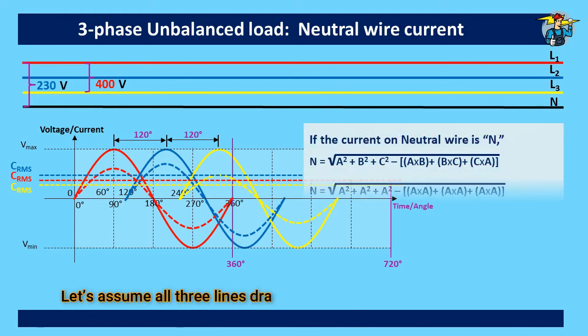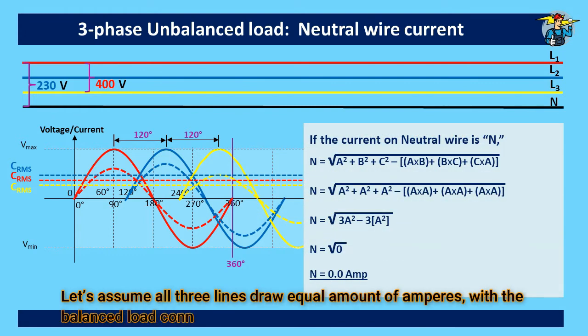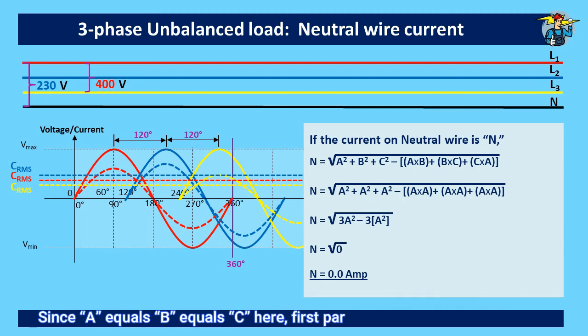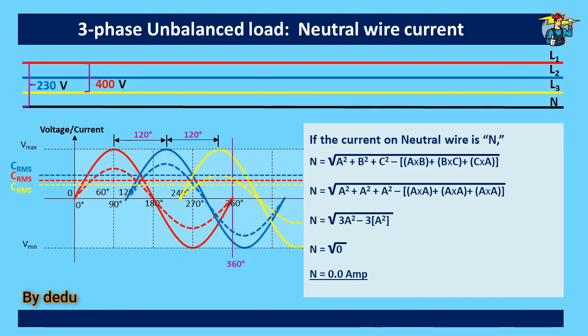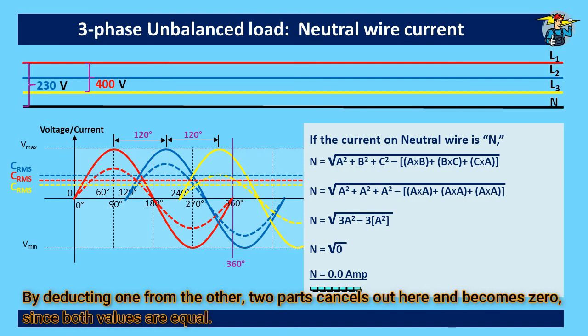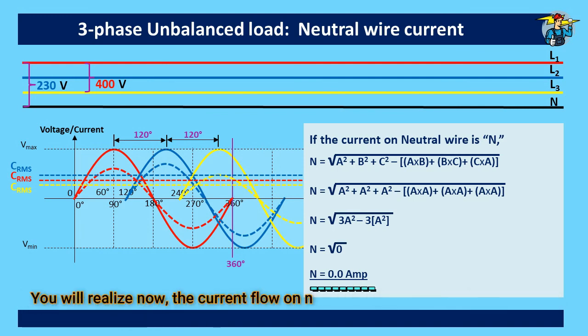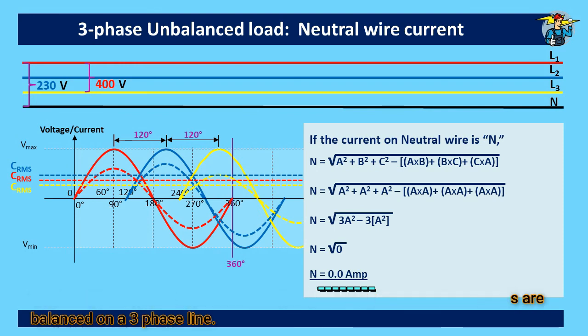Let's assume all 3 lines draw equal amount of amperes with the balanced load connected to it. Since A equals B equals C here, first part becomes 3 into A squared. Second part becomes 3 into A squared, since all values are same here. By deducting one from the other, two parts cancel out here and becomes 0, since both values are equal. You will realize now, the current flow on neutral wire is 0 when loads are balanced on a 3 phase line.